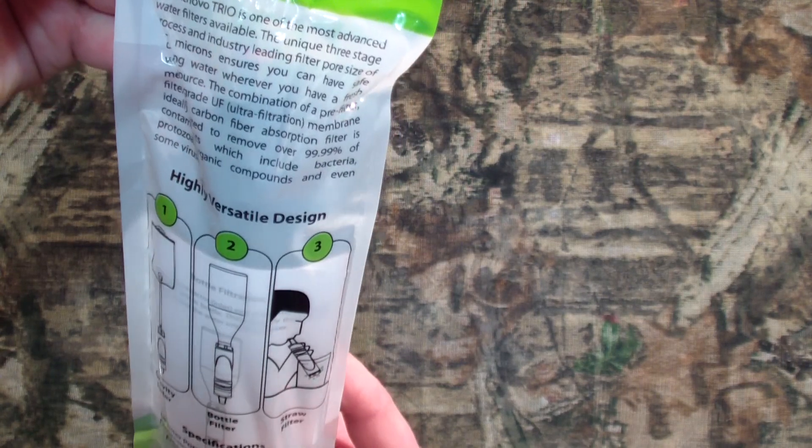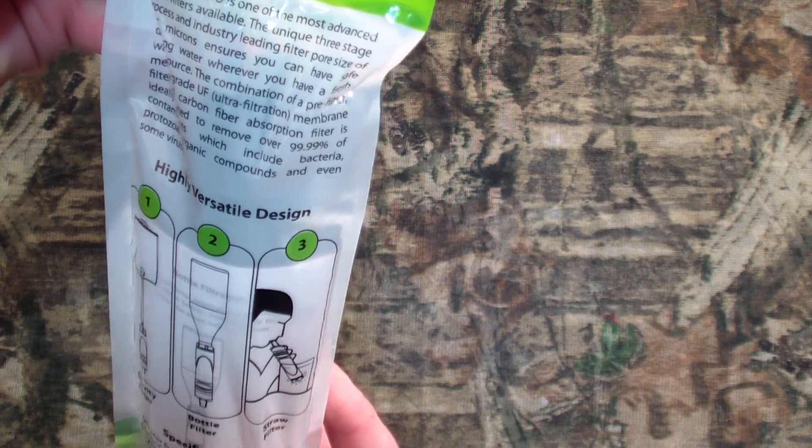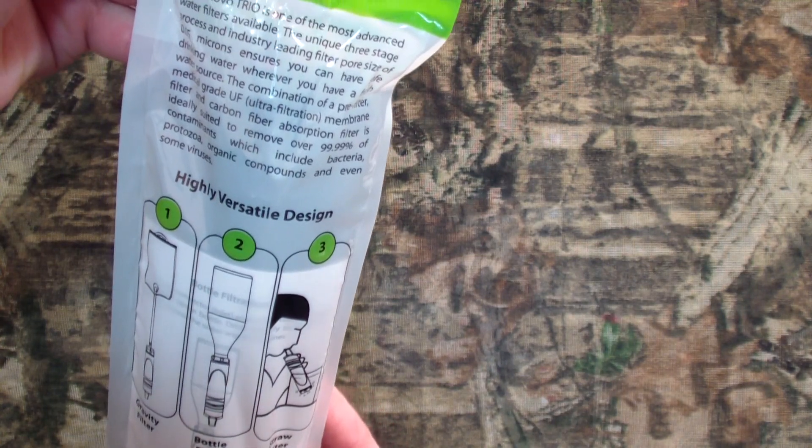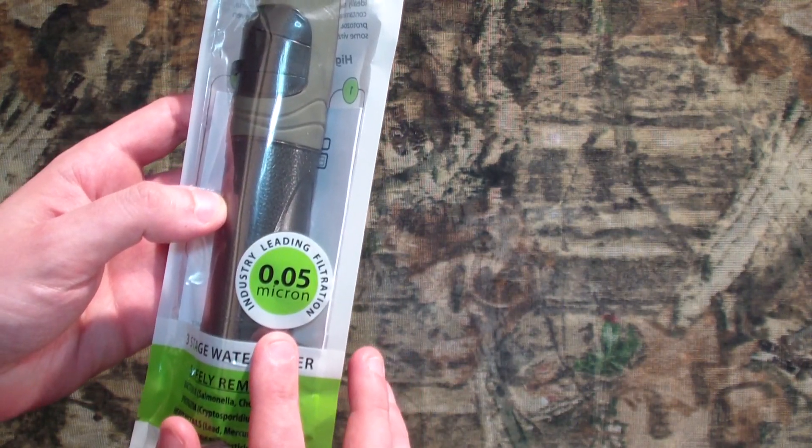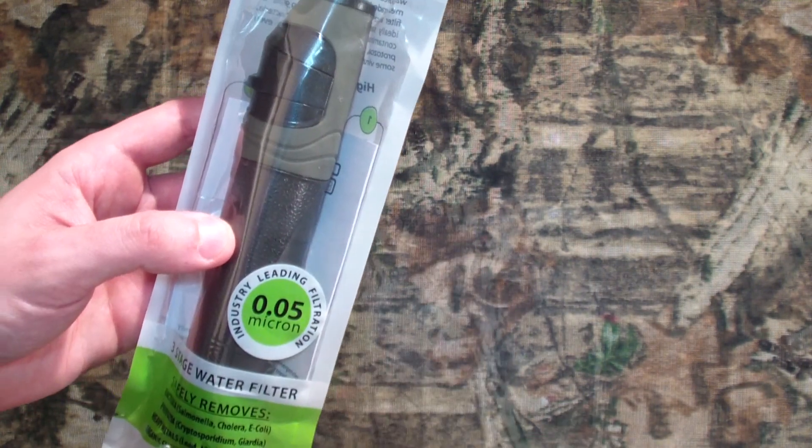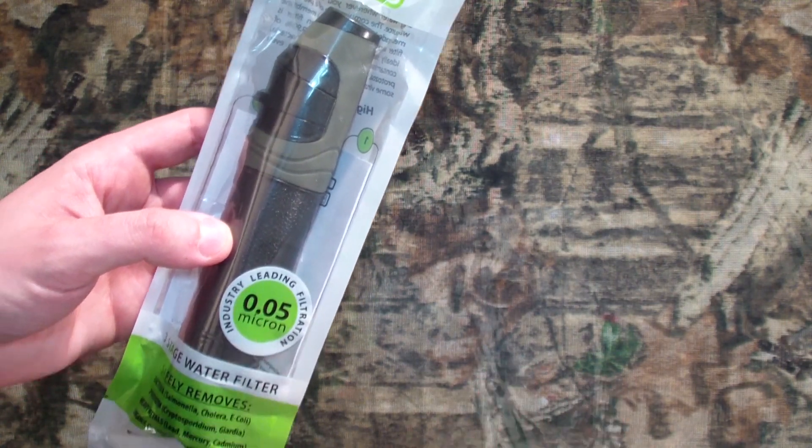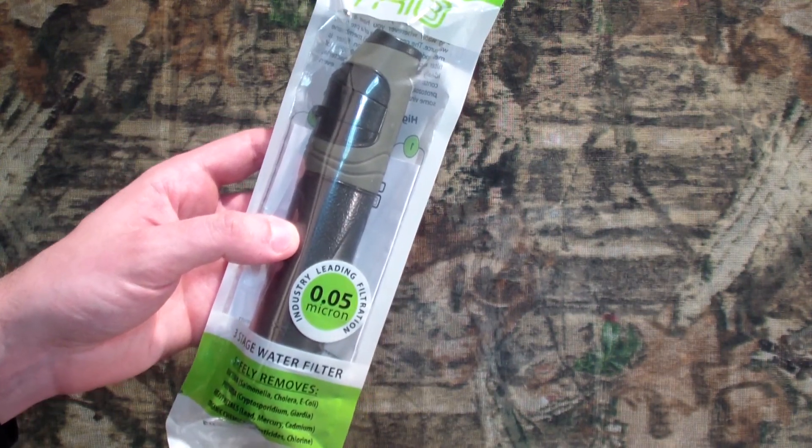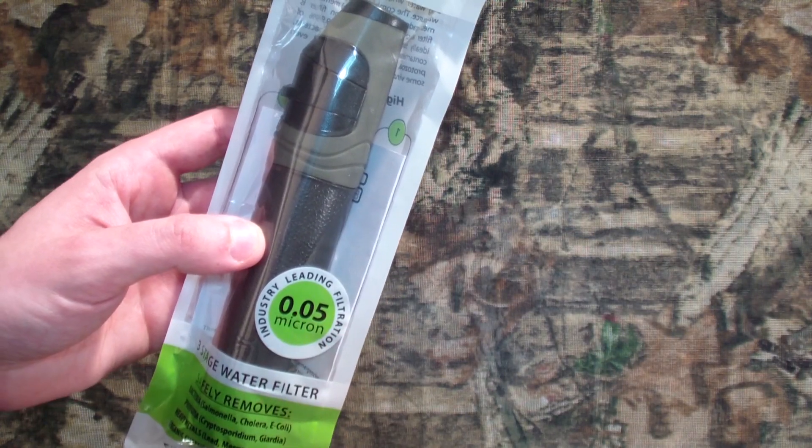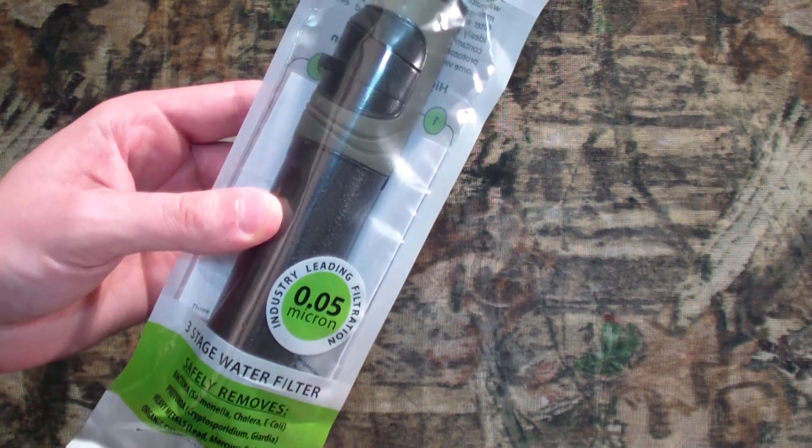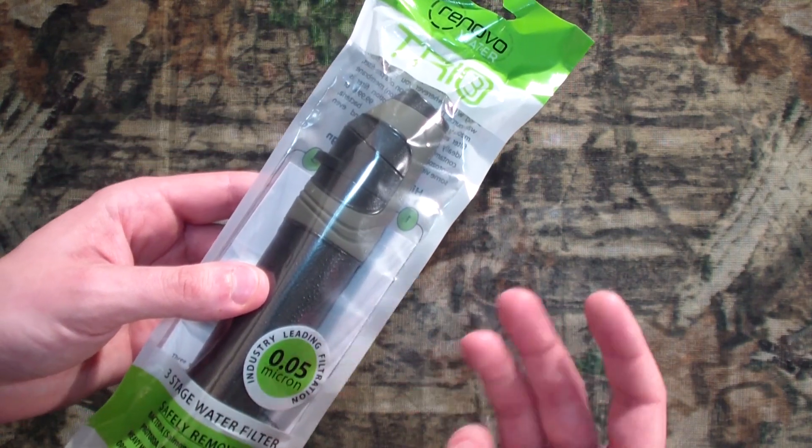It says 0.05 micron. Wow. Now that's actually, as far as I'm concerned, kind of a game changer for a portable backpacking unit. The squeeze and just about anything else you can find, a lot of things don't even go down as far as the squeeze. The squeeze is actually a 0.1. This is going down to 0.05.